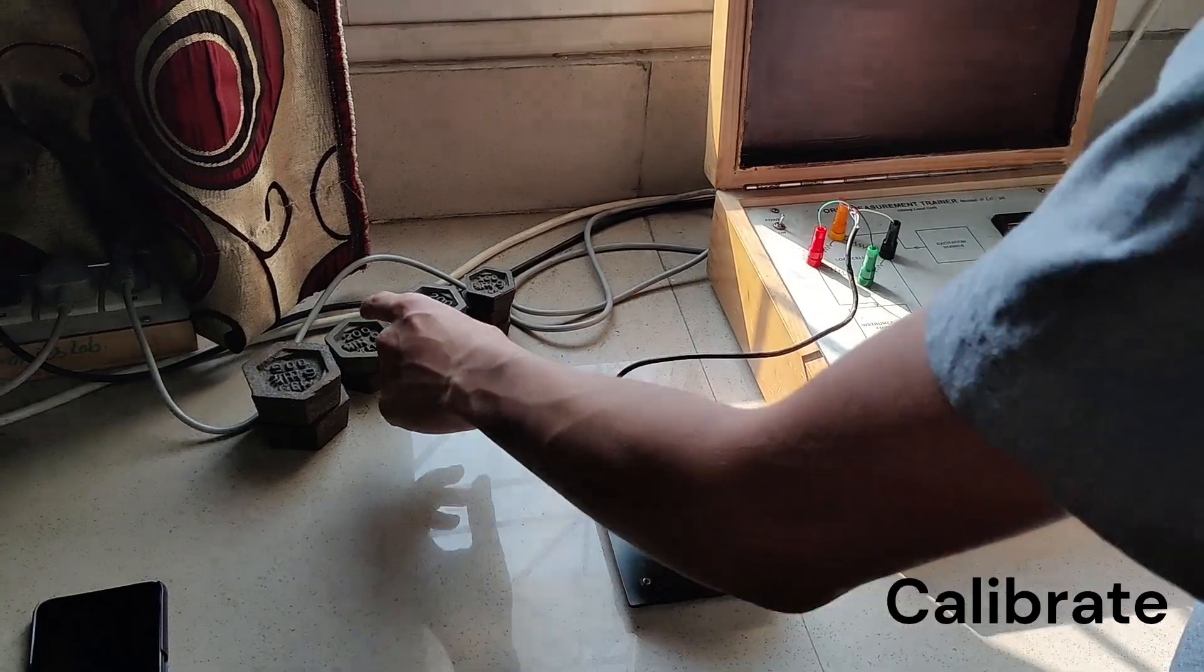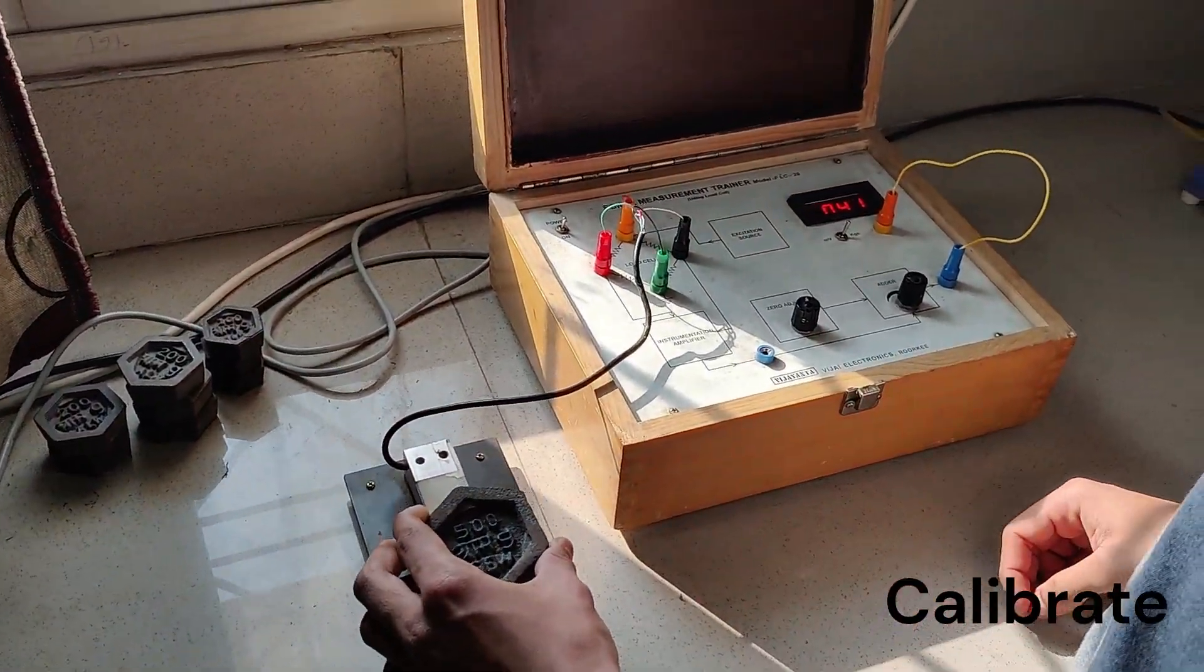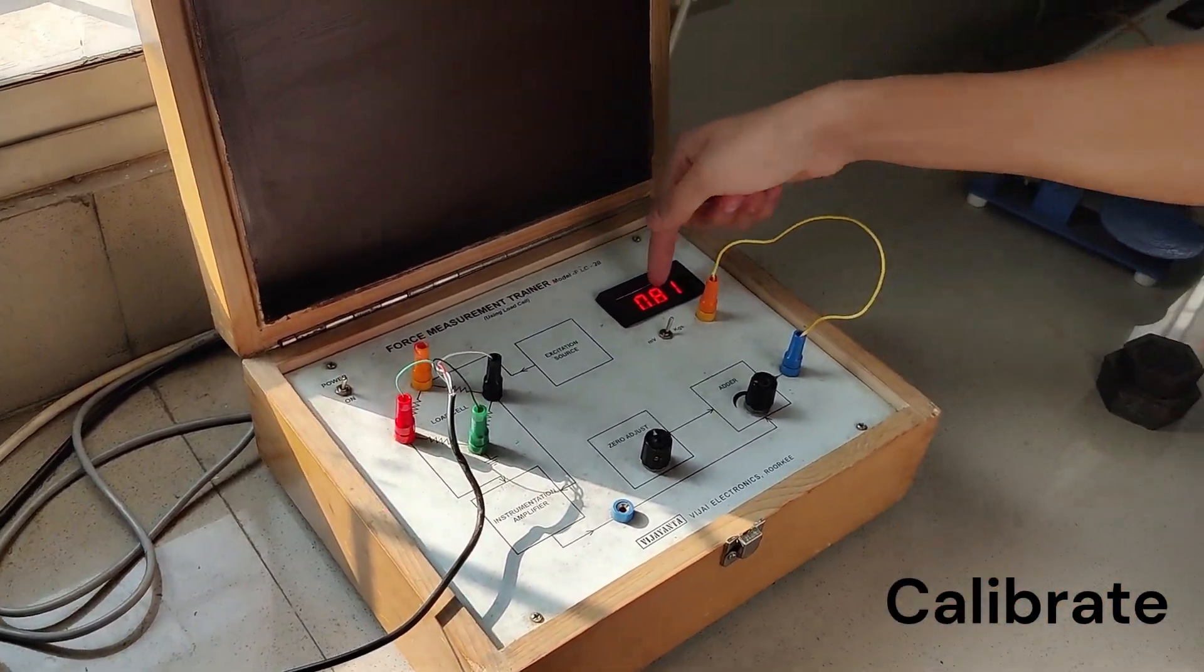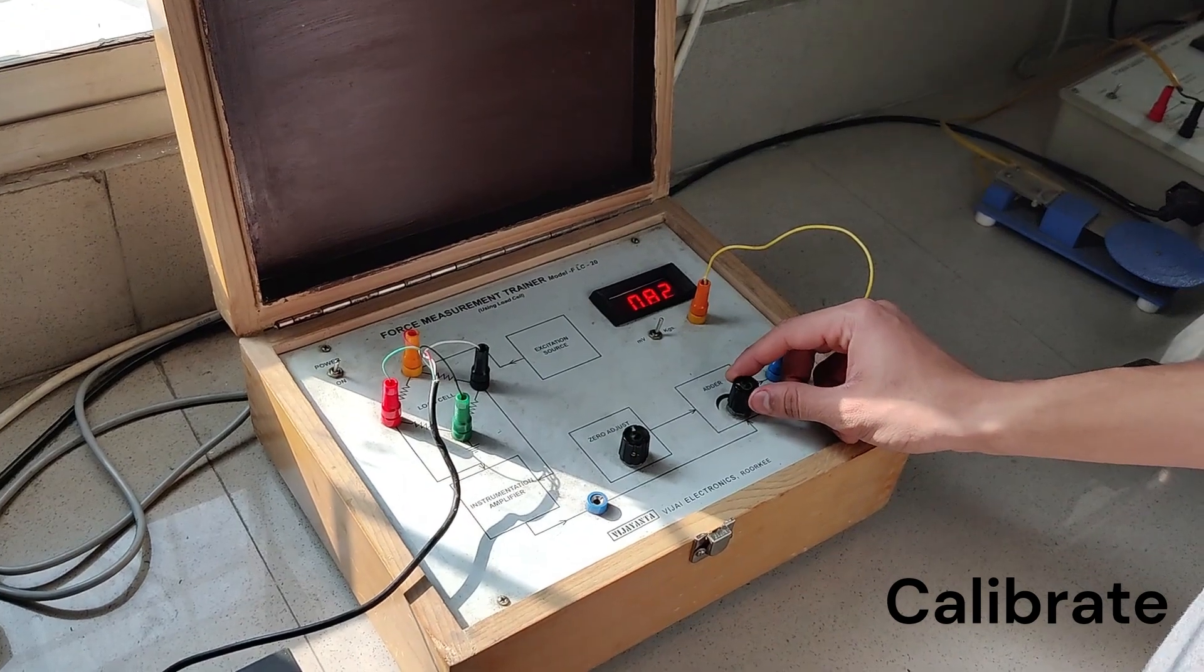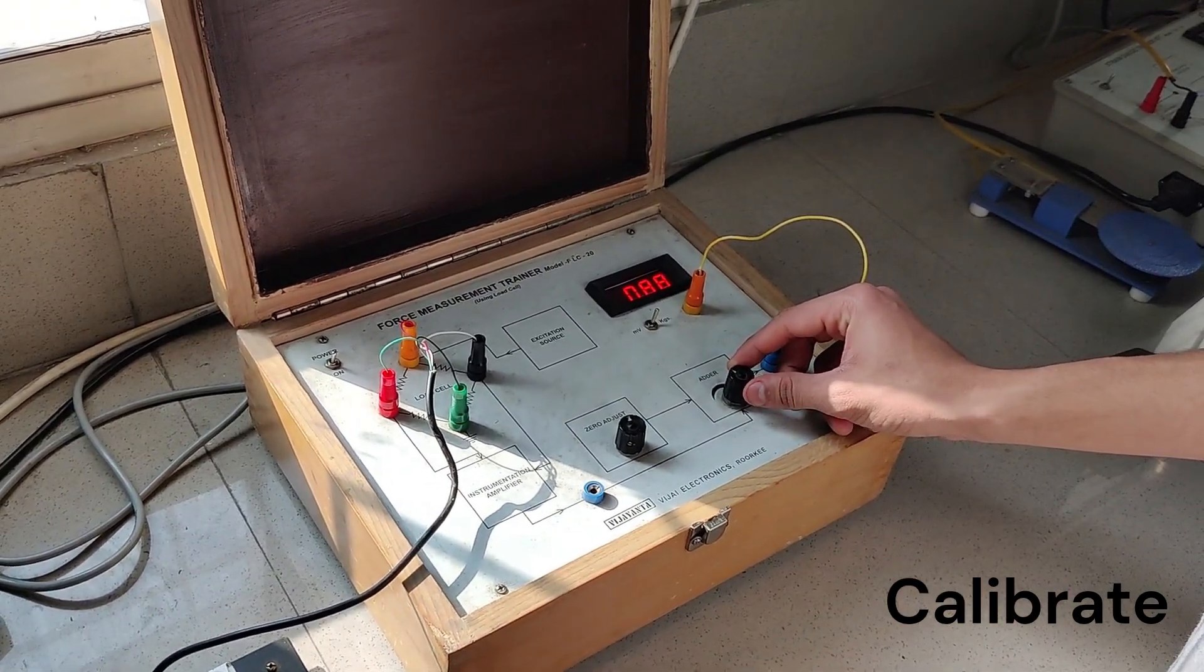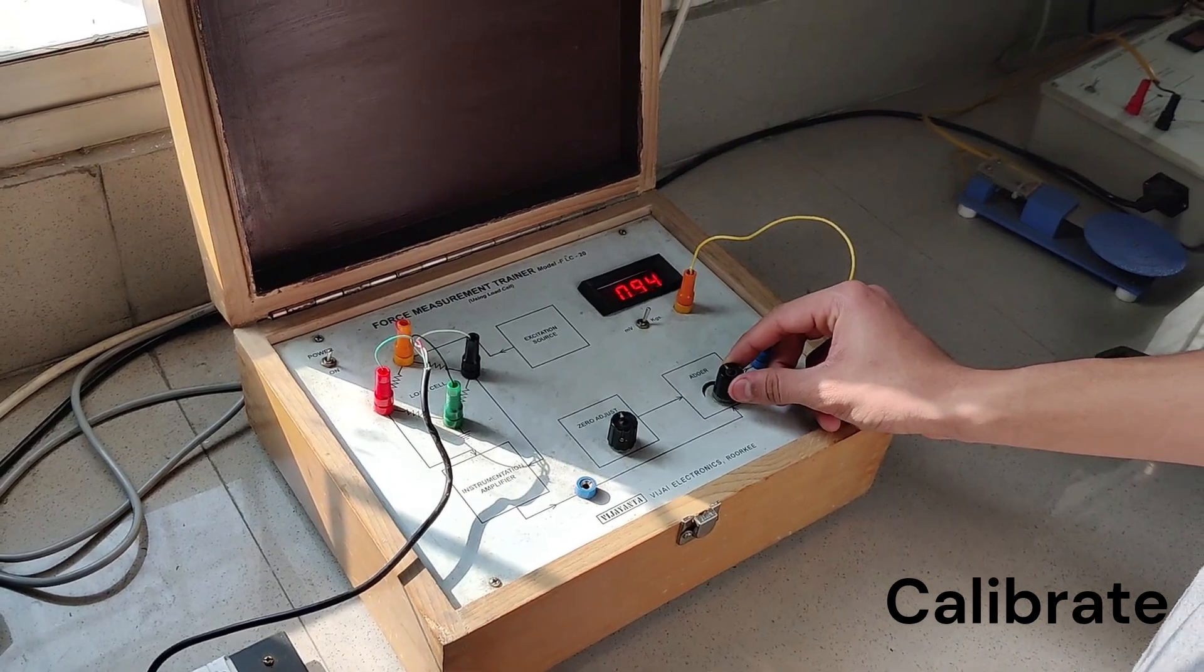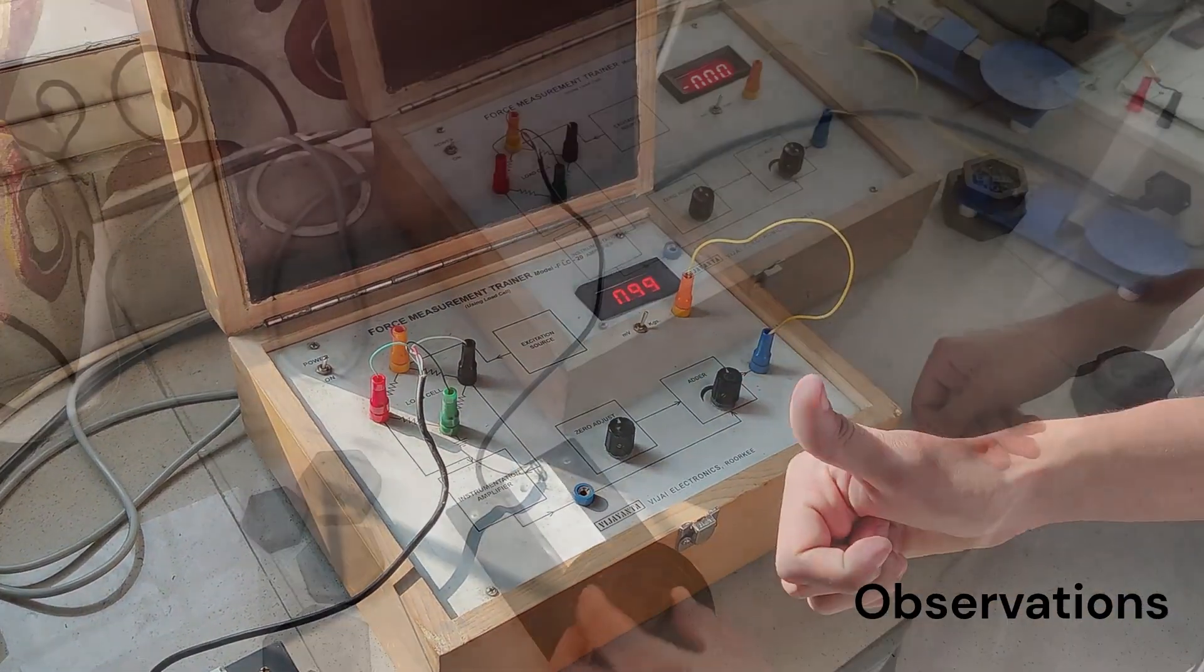The second step is to calibrate the load cell by putting 1 kg load on the load cell. The reading is 0.81 but it should be 1, so calibrate it by turning the adder knob. Now it is calibrated.